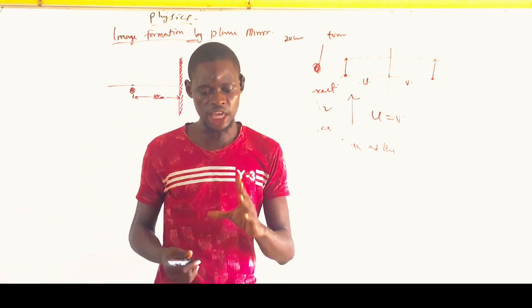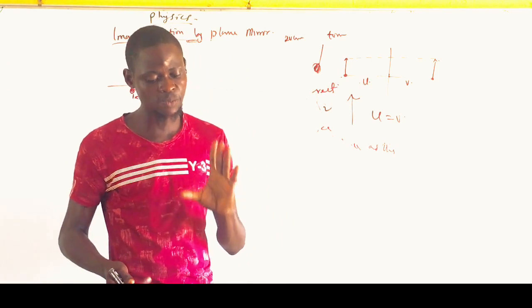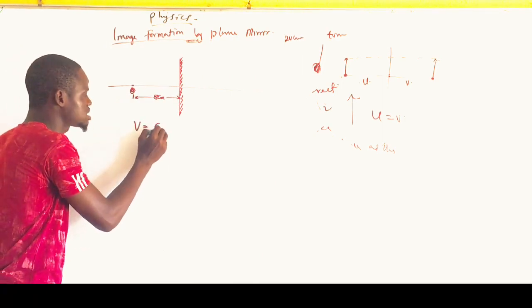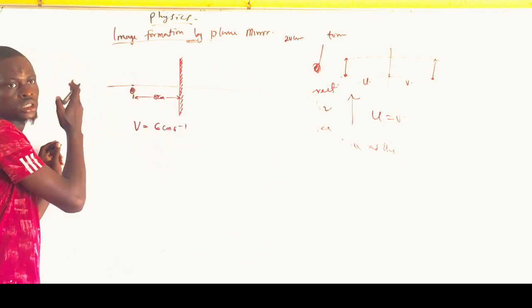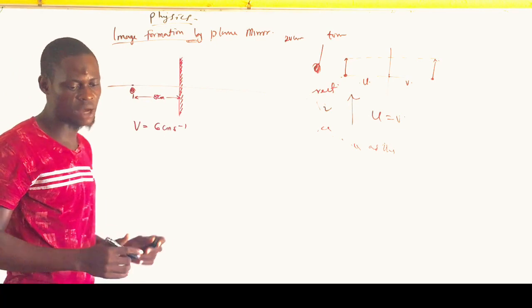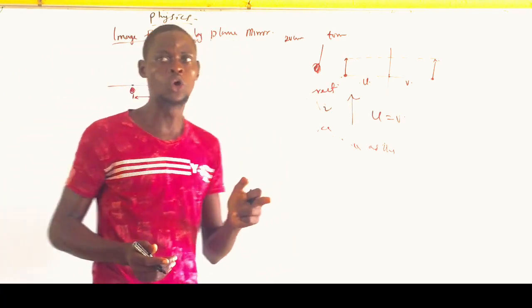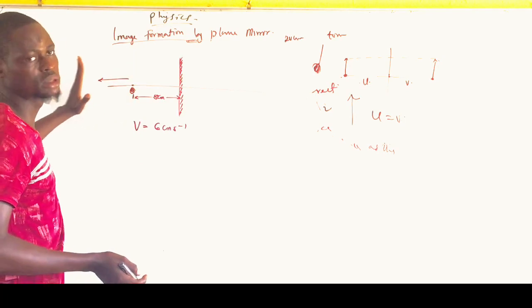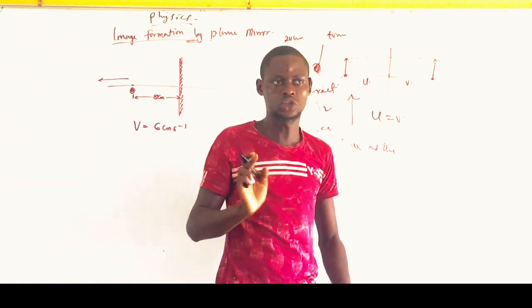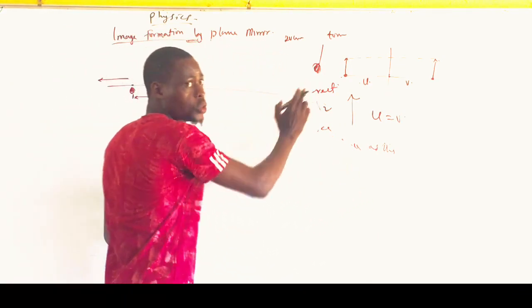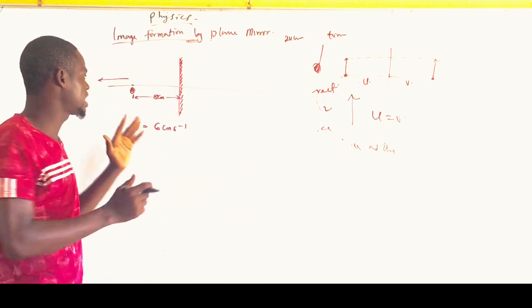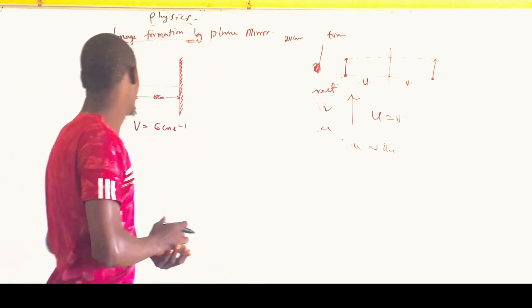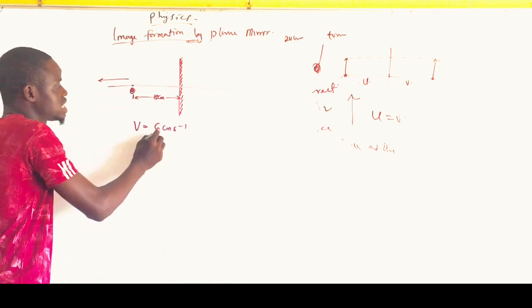The object then moves at a speed of 6 cm per second away from the mirror. 'Away' means the object is moving backward, increasing its distance from the mirror. Now, if an object is moving away from the mirror, the image will also be moving away from the mirror. If an object moves closer to the mirror, the image will also move closer to the mirror. The object moves at a velocity of 6 cm per second.